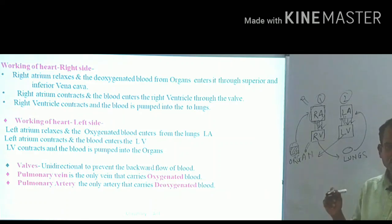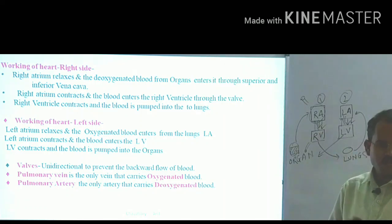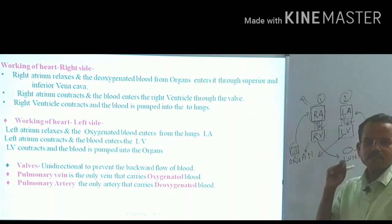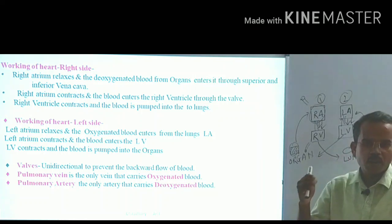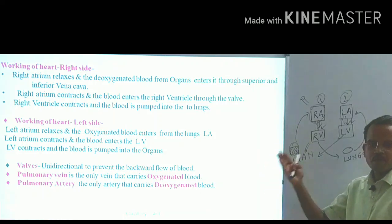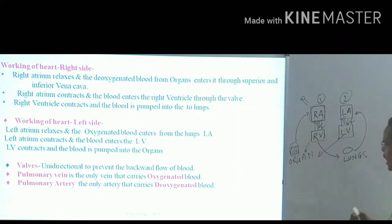Students often answer that artery means oxygenated blood and vein means deoxygenated blood, but that is not the correct way to describe them. The correct definition: artery means it gives or distributes blood away from the heart, and vein means it collects blood towards the heart. That is the proper distinction between artery and vein.